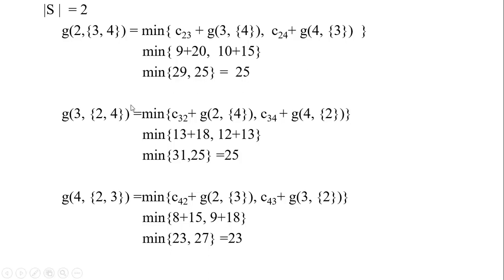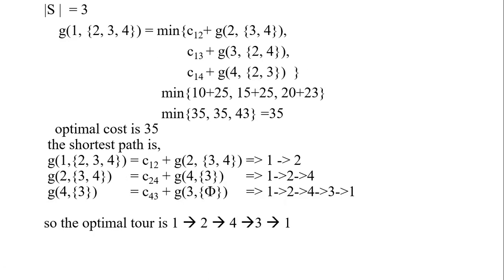Similarly, at city three needing to visit cities two and four: visiting city two gives 31 and visiting city four gives 25, so the minimum is 25 and the optimal is to go city four first. For city four with two remaining cities, the suboptimal solution is 23. These represent all subproblems where exactly two cities must be visited.